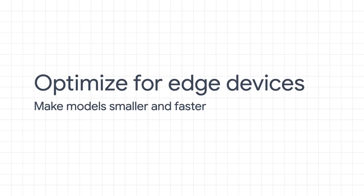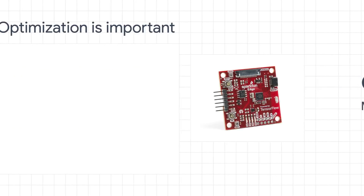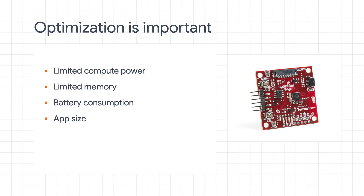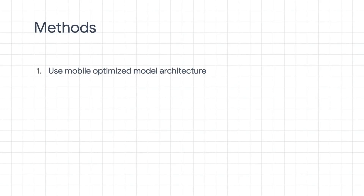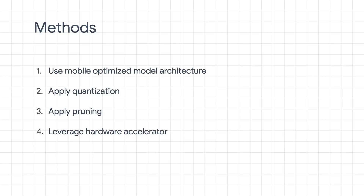Now let's talk about how to optimize machine learning models for deployment on edge devices. Edge devices generally have less CPU capability and memory, and many are battery-powered, so it's very important to reduce power consumption. Model size is also critical — given that the mobile app size budget is around 20 megabytes, adding an extra 100 megabytes for a machine learning model is unacceptable. There are three main optimization methods: using a mobile-optimized model architecture, applying quantization and pruning, and leveraging hardware accelerators available on the hardware.